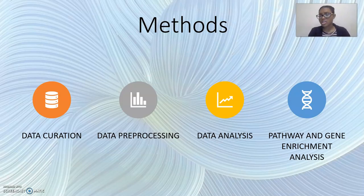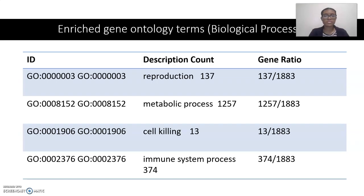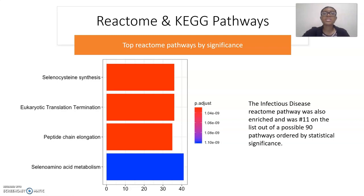Our last method was pathway and gene enrichment analysis, which helps us find whether the differentially expressed genes were associated with a biological process or molecular function. This is a table of the enriched gene ontology terms: reproduction, metabolic process, cell killing, and immune system process, along with their gene ratios. These are the top reactome pathways by significance. The infectious disease reactome pathway was also enriched and was number 11 on the list out of a possible 90 pathways ordered by statistical significance.